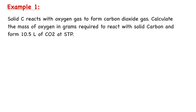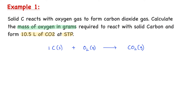Example 1. Solid carbon reacts with oxygen gas to form carbon dioxide gas. Calculate the mass of oxygen in grams required to react with solid carbon and form 10.5 liters of carbon dioxide at STP. The balanced chemical equation is: C + O₂ → CO₂. According to the equation, 1 mole of carbon reacts with 1 mole of oxygen to form 1 mole of carbon dioxide.